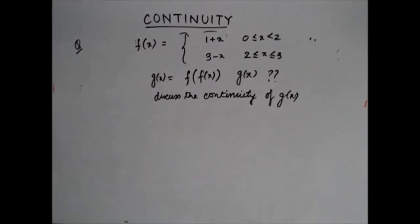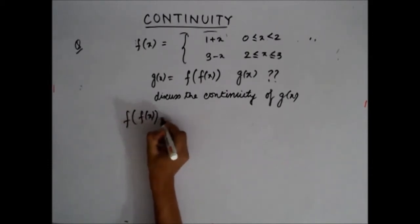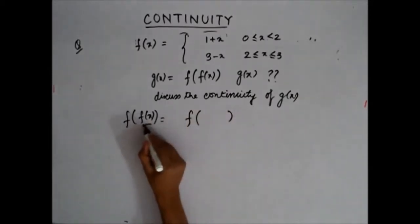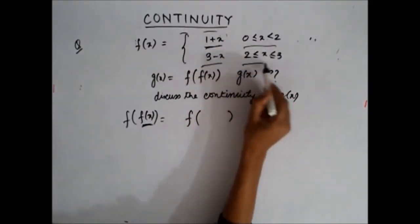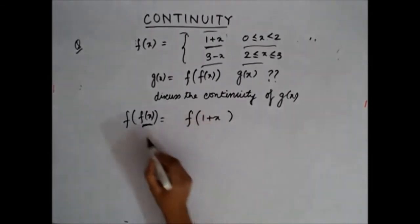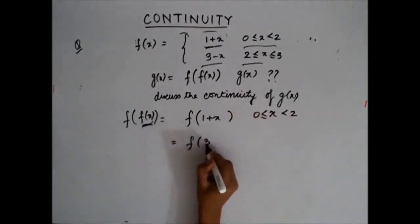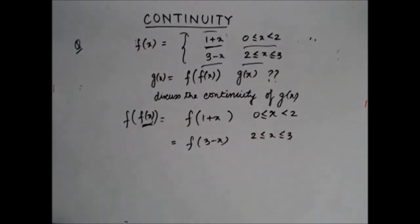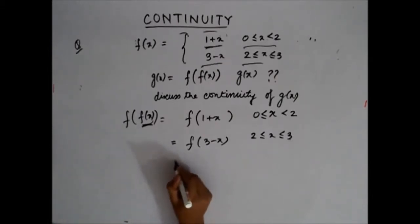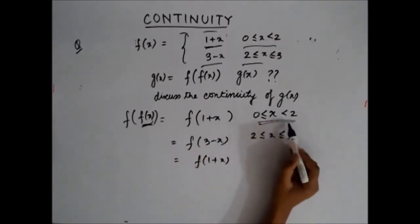Let's find f(f(x)). I replace the argument of f with f(x). Since f(x) = 1 + x for x in [0, 2) and f(x) = 3 − x for x in [2, 3], I need to evaluate f at these expressions. For f(1 + x), I split the interval 0 to 2 into 0 to 1 and 1 to 2 to handle the two sub-cases.